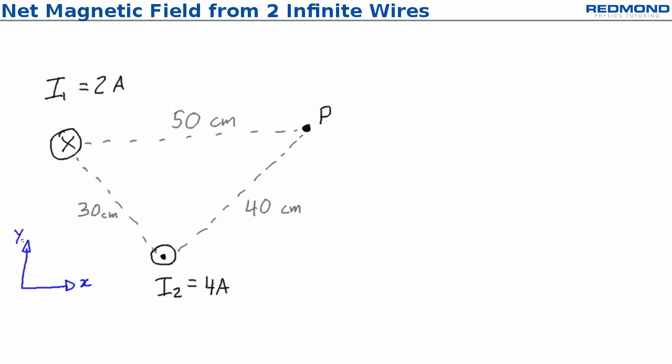Using the given xy-axes, find the magnetic field from each wire, B1 and B2, and the net magnetic field, all at point P.